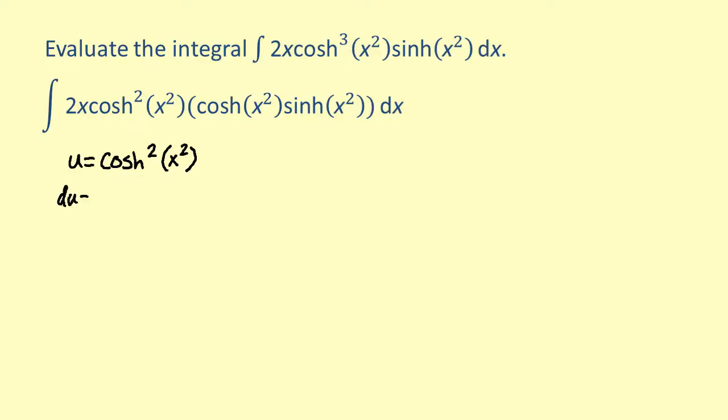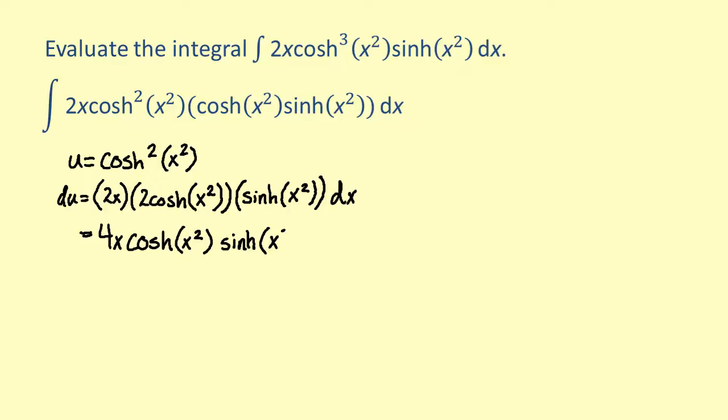Differentiating, we get du is equal to 2x times 2 times the hyperbolic cosine of x squared times the hyperbolic sine of x squared dx. Simplifying, we get 4x times the hyperbolic cosine of x squared times the hyperbolic sine of x squared dx.